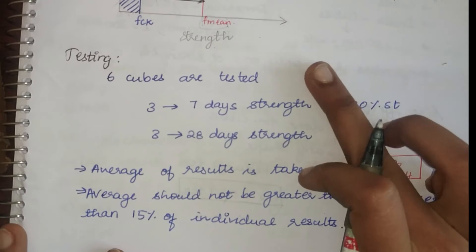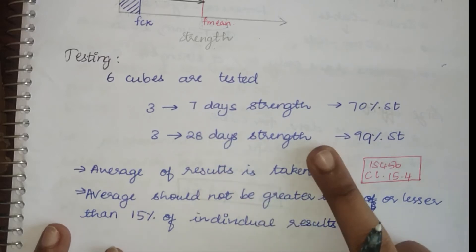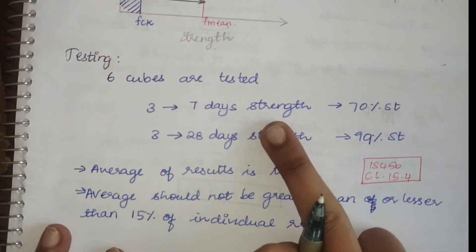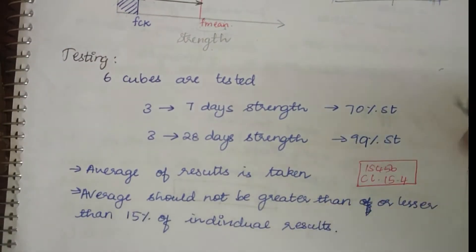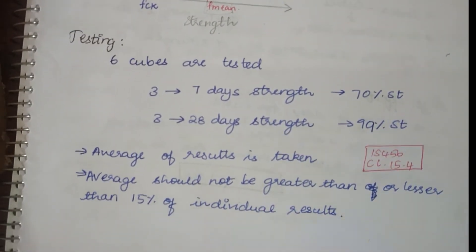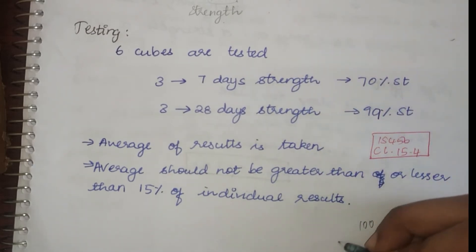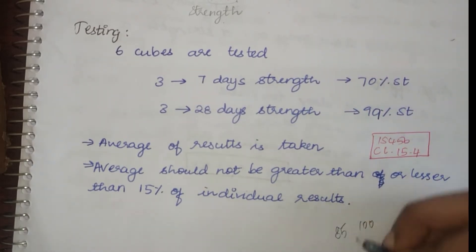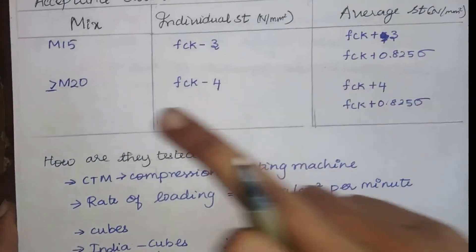Next, testing. Six cubes are usually tested. Why? Because three cubes are tested for the seven day strength and three cubes are tested for the 28 day strength. So three cubes when we test for seven day strength, it should be at least 70 percentage of the strength achieved. On the 20th day, at least 99 percentage of strength should be achieved. Average of the results are taken and according to IS 456 clause number 4.15.4, the average should not be greater than or less than 15 percentage of the individual results. Which means if 100 is my average, then my other value should not fall below 85 or should not fall above 115.